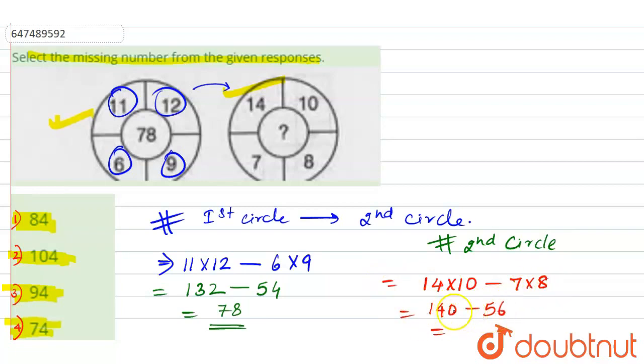Now we will subtract it. 140 minus 56 equals 84. So our answer is 84. The correct option for the given question is option 1. I hope now you have a better understanding of this question. Thank you very much.